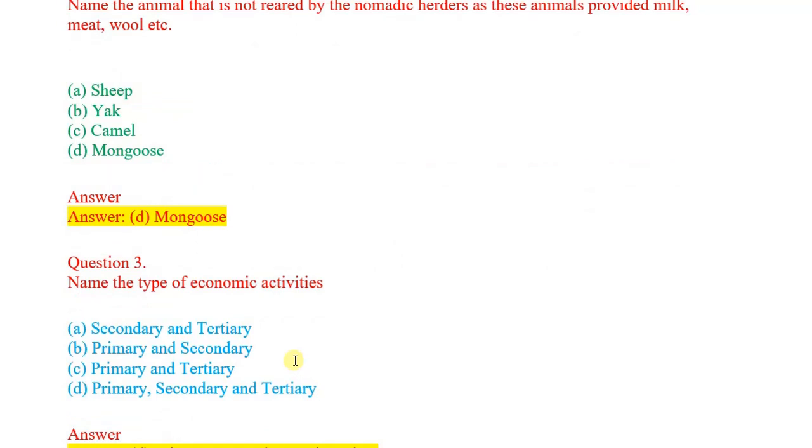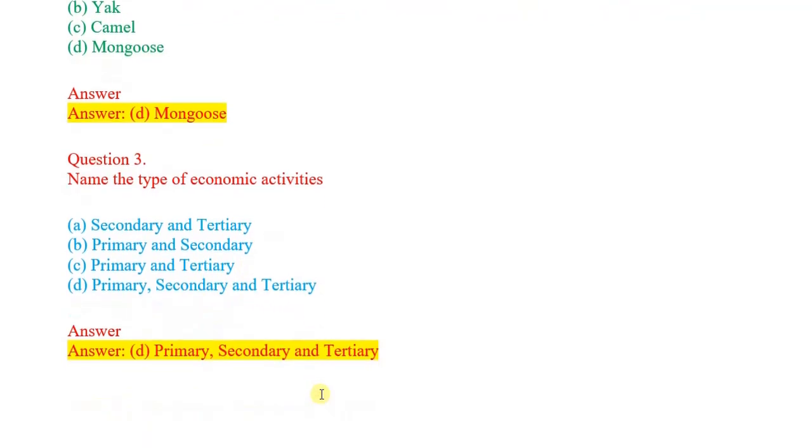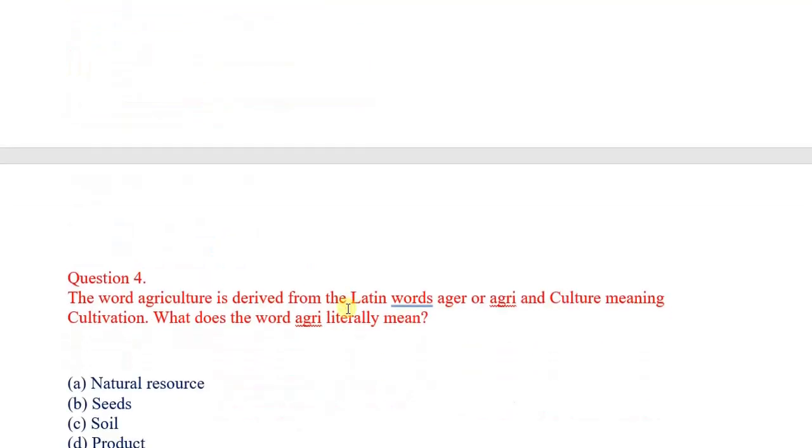Question number 3: Name the type of economic activities. Options: secondary and tertiary, primary and secondary, primary and tertiary, primary, secondary and tertiary. Correct answer: primary, secondary and tertiary.